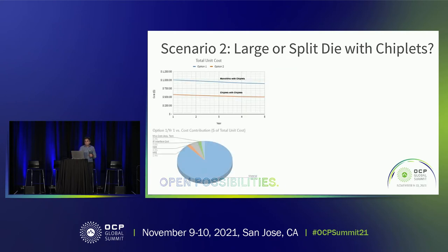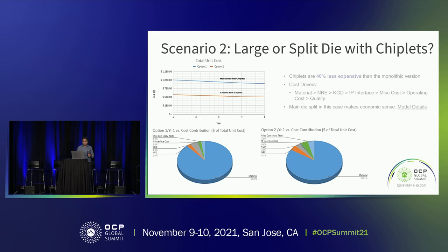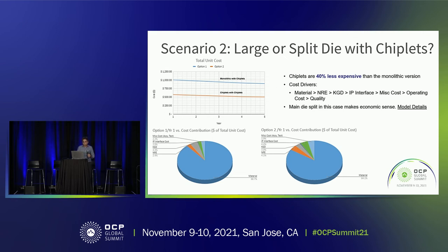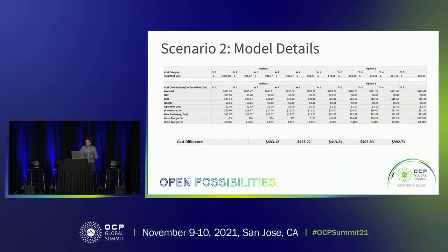In scenario two — comparing chiplet configurations — the setup is similar, but the cost drivers have shifted. In this scenario, it's not material or KGD but NRE driving costs. You can use this insight to say: if my NRE is so high, perhaps I should employ IP reuse, or use the same chip mask across multiple product lines to lower upfront NRE costs. It helps you prioritize which part of the ecosystem to address to minimize cost and improve the benefits of chiplets.